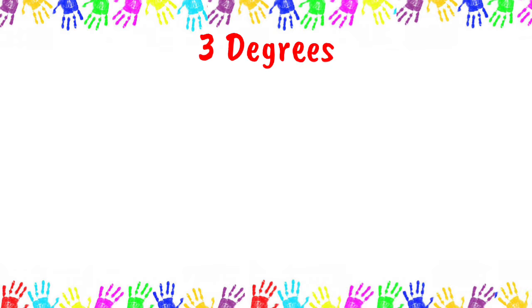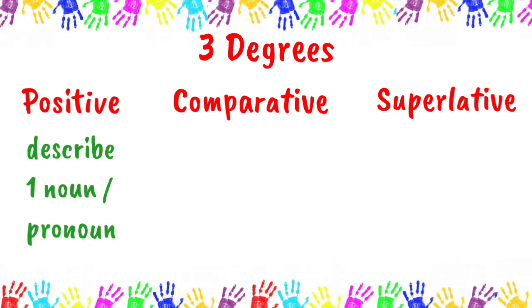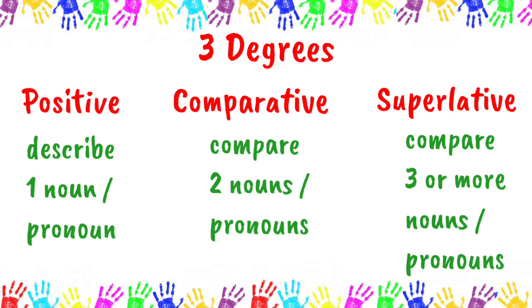Adjectives have three degrees. These are positive, comparative, and superlative degrees. The positive degree is used to describe one noun or pronoun. The comparative degree is used to compare two nouns or pronouns. And the superlative degree is used to compare three or more nouns or pronouns.